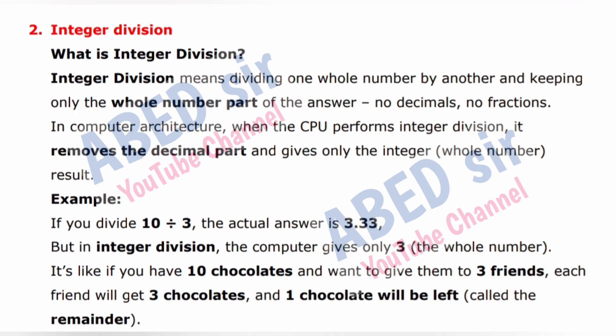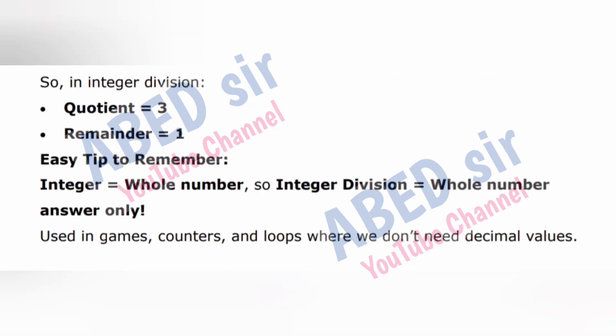It's like if you have 10 chocolates and want to give them to 3 friends — each friend will get 3 chocolates and 1 will be left, called the remainder. So in integer division, quotient equals 3, remainder equals 1. Easy tip to remember: Integer equals whole number, so integer division equals whole number answer only. Used in games, counters, and loops where we don't need decimal values.